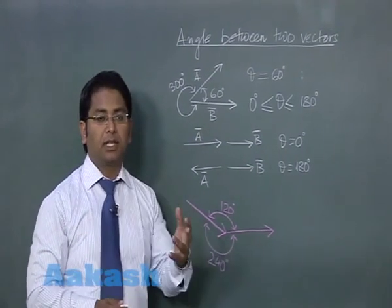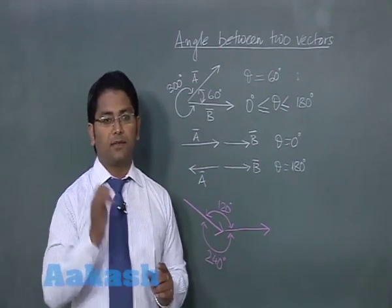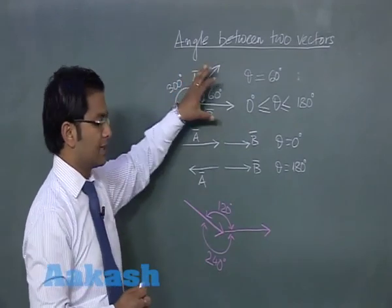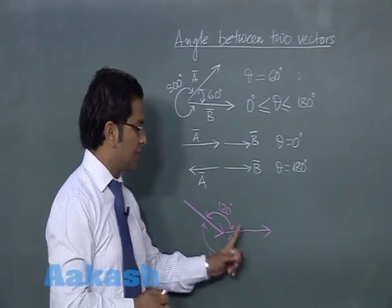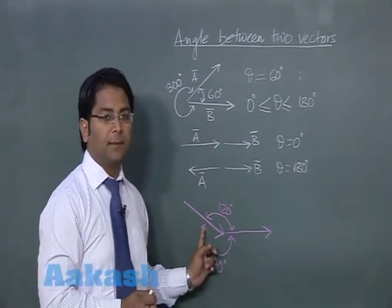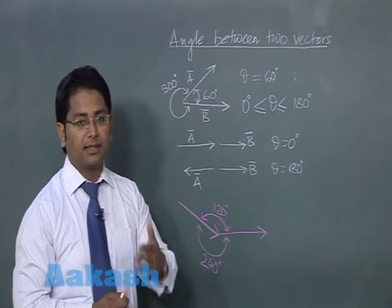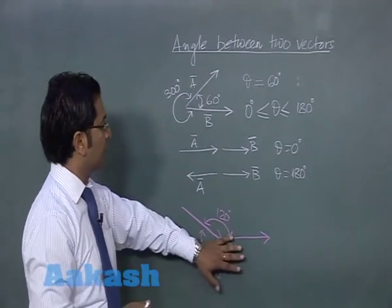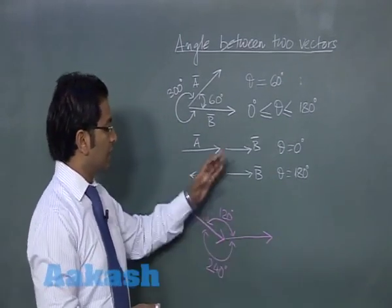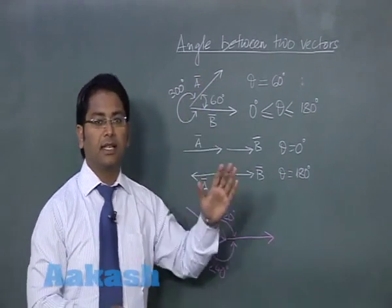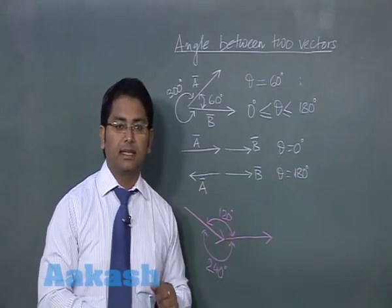The first step to calculate the angle between two vectors is to bring them into standard form — meaning both vectors must share the same starting point. Until they are in this standard form, we are not able to calculate the angle. Once in standard form, the angle can be readily calculated. How to bring them into standard form will be discussed shortly.